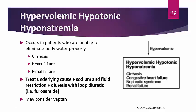Hypervolemic hypotonic hyponatremia occurs in patients unable to eliminate body water properly — such as those with cirrhosis, renal failure, or heart failure. Because there is too much volume, you need to either eliminate or restrict that volume.